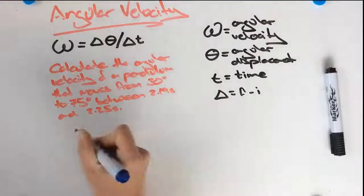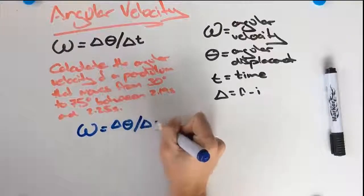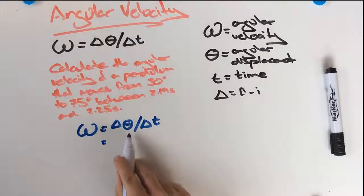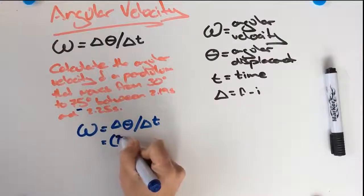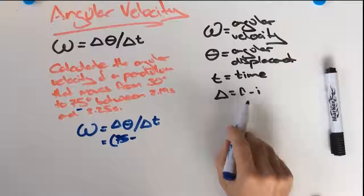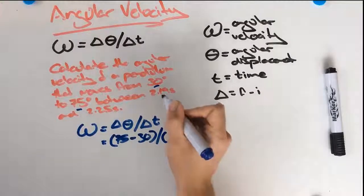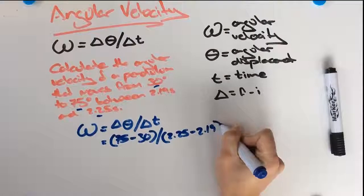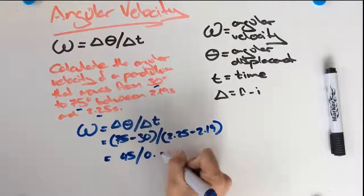So what are we going to do? If we put down our formula here, what we can do is identify our final and initial angular displacements. So our final angular displacement is going to be 75, and we are going to minus it from our initial displacement, which is 30. And then we are going to do the same for our time. So our final time: 2.25 minus our initial time of 2.19. So this is going to give us 45 divided by 0.06.